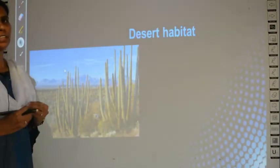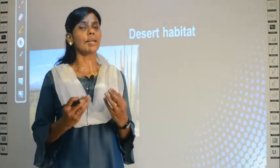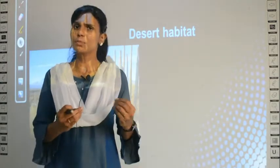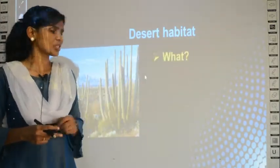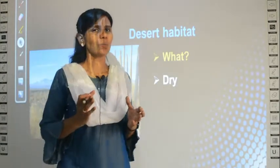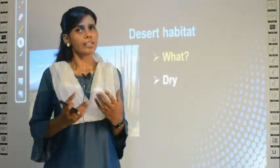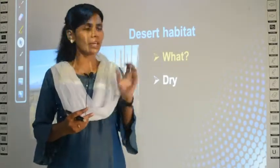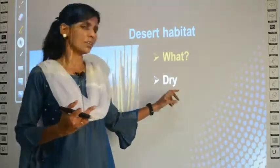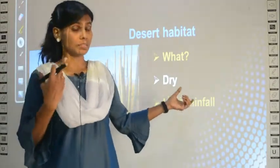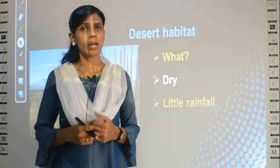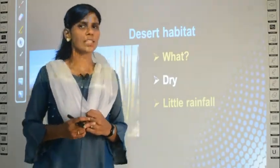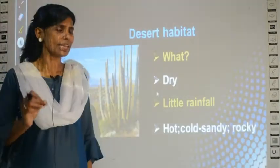Before learning about the adaptations of desert plants, let us study some facts about what a desert is. Which place can you call a desert, or what are the characteristic features of a desert? Desert is a place which is usually dry — the soil is not wet. The soil surrounding us is wet to some extent, but the soil is always dry in a desert. And why is it dry? Because there is very little rainfall — almost no rainfall in the desert at all.